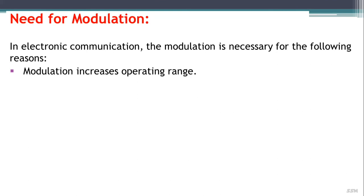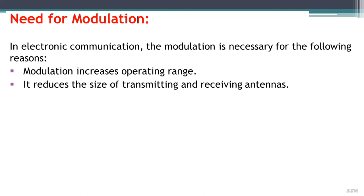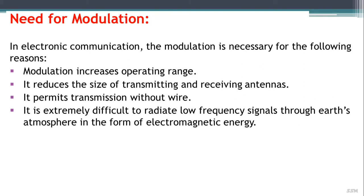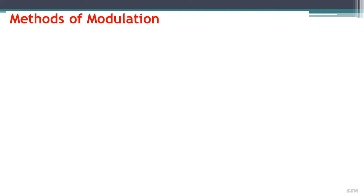Modulation increases the operating range, reduces the size of transmitting and receiving antennas, and permits transmission without wire. It is extremely difficult to radiate a low frequency signal through the earth's atmosphere in the form of electromagnetic energy. Due to these reasons, modulation is required. Next, we'll discuss methods of modulation.